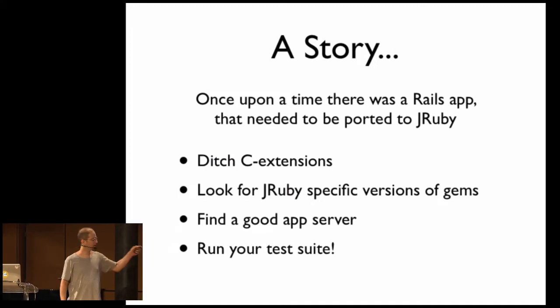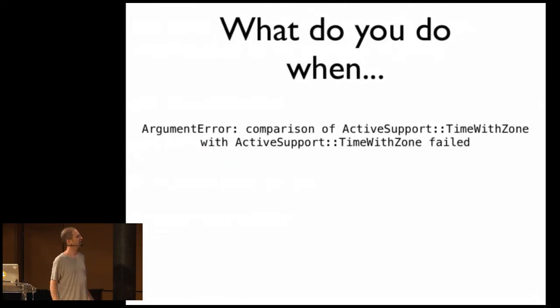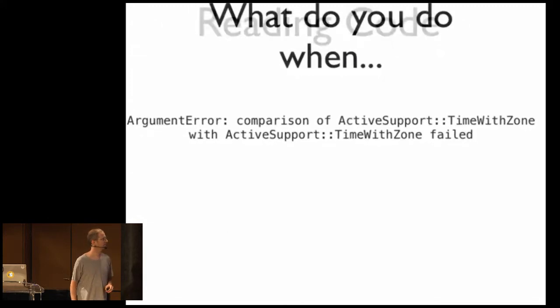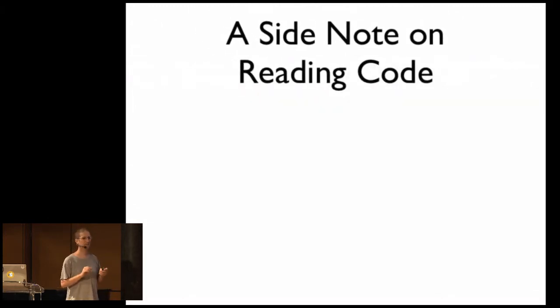So this is exactly what we did, and in running our test suite, we had a handful of failing tests. But there was one in particular that was, let's say, a little troubling. Because it was generating this error. Argument error. Comparison of active support time with zone with active support time with zone failed. Okay, now you may have run into these comparison of A with B failed error messages before, but I'm going to suspect that you've probably never had a case where A and B are the same class. It kind of doesn't make sense. Why can you not compare one object of a class to another object of the same class? Well, we're going to get into why this happened, but before we do, I wanted to take a moment to talk about reading code.